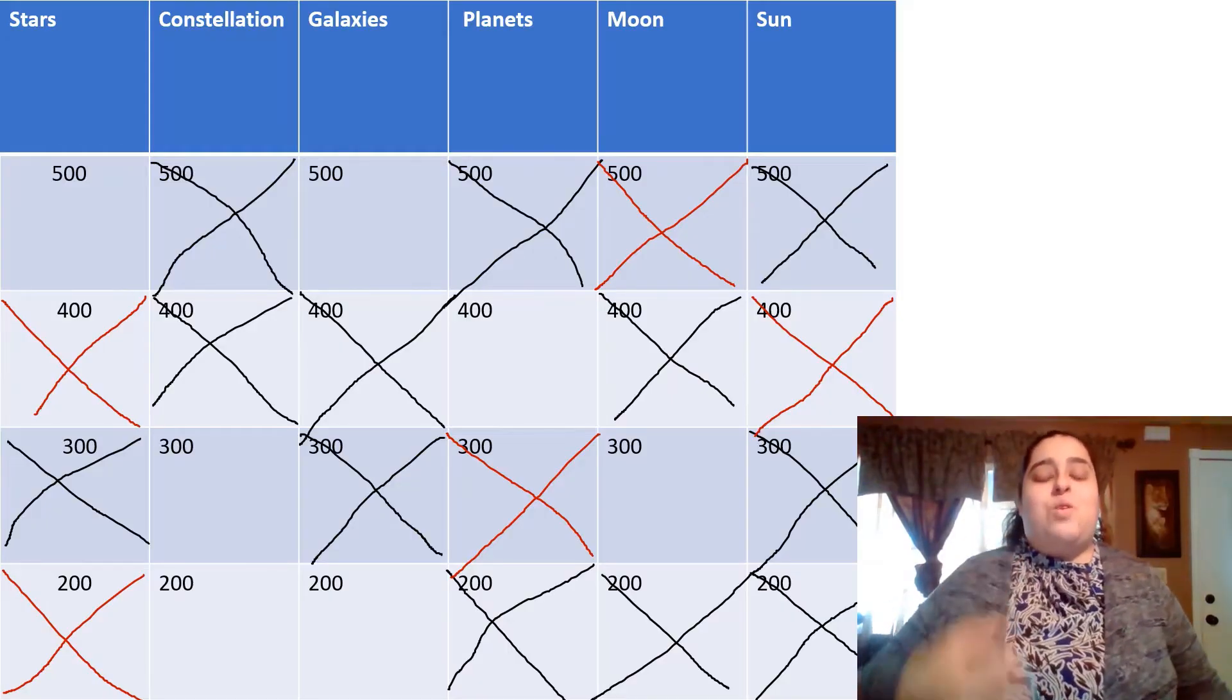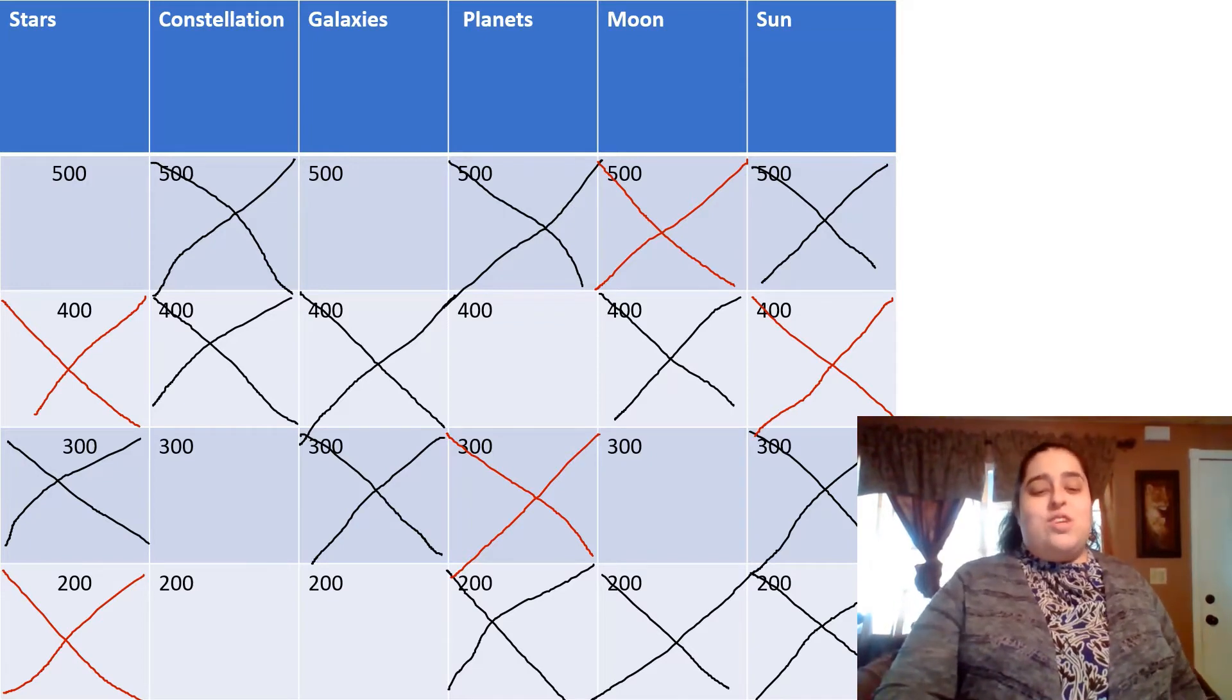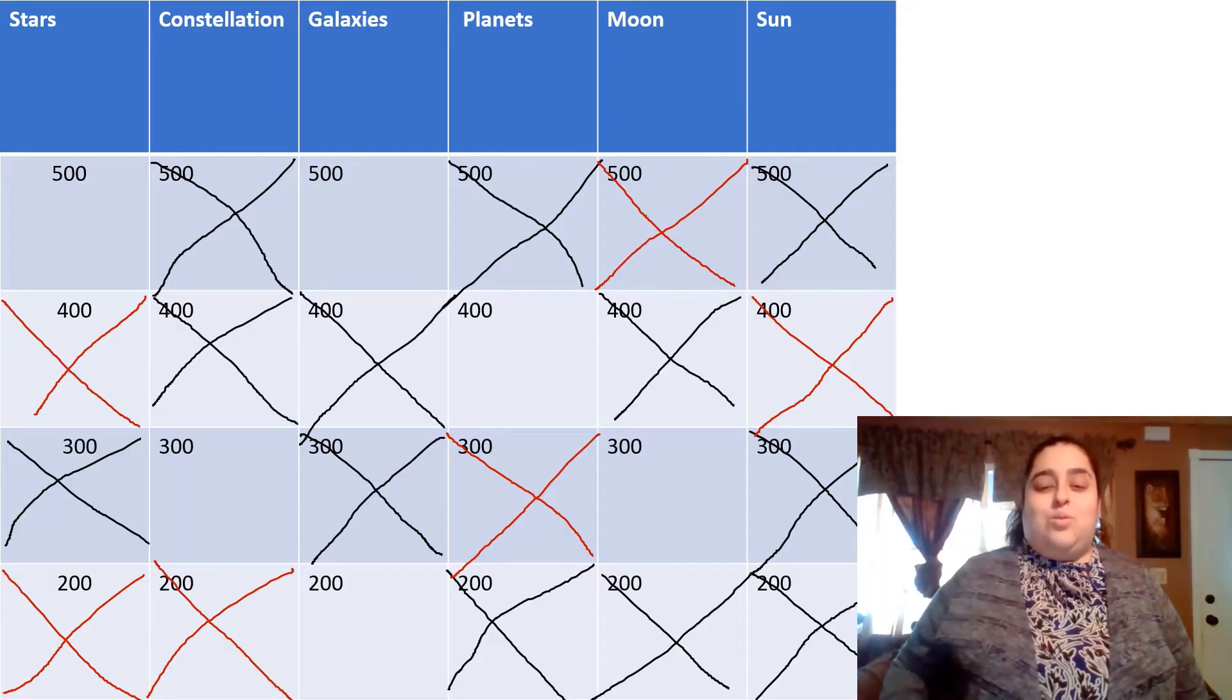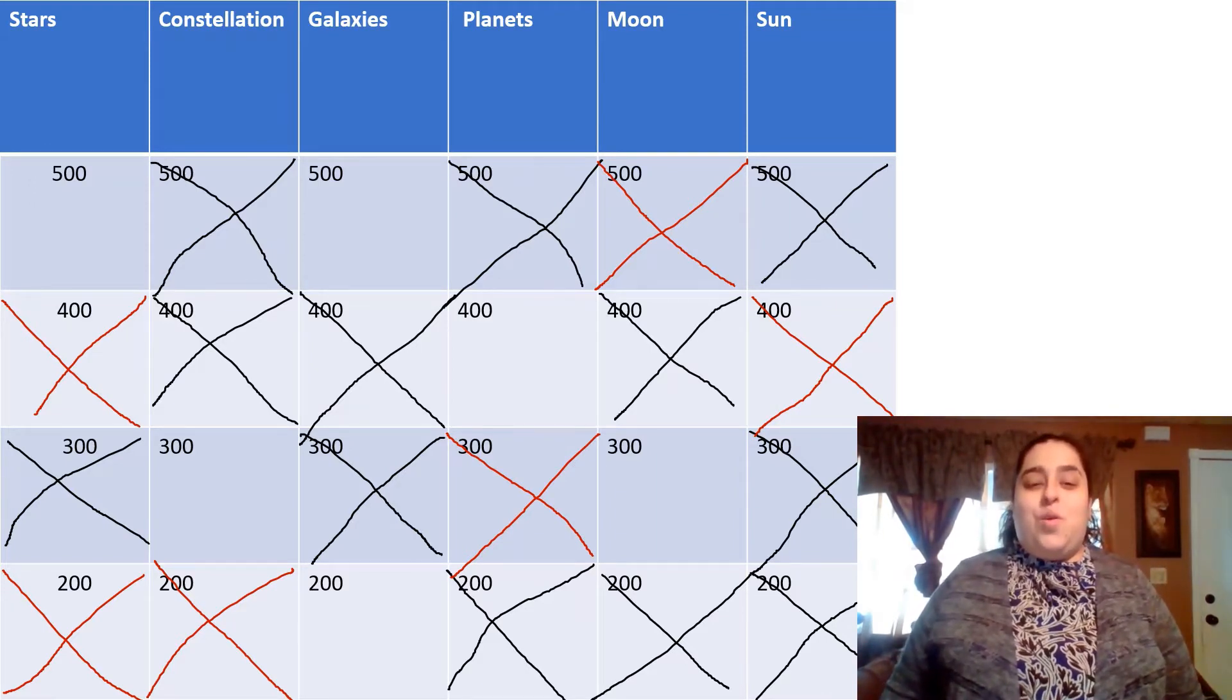Constellations, what are we going for, 300 or 200? 200 it is. Oh, where are we gonna go? We have one of each I believe, where are we gonna go?